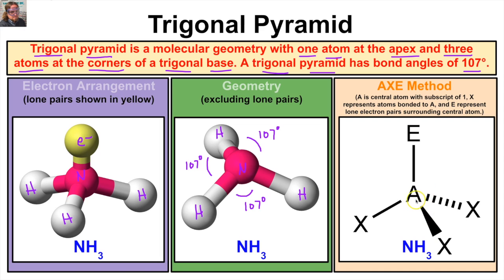Looking at the AXE method for trigonal pyramid: we have nitrogen at the center, hydrogens around it, and a lone pair of electrons on the central atom. All bond angles are 107 degrees. That is our trigonal pyramid molecular geometry. Now let's look at tetrahedral.